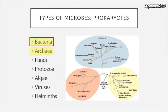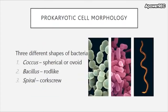We will also briefly cover Eukarya, which contain the fungi, protozoa, algae, and helminths. At some point we'll get into greater detail on viruses. Prokaryotic cell morphology comes with three different shapes: coccus, which is spherical or ovoid; bacillus, which is rod-like; and spiral, which is corkscrew.